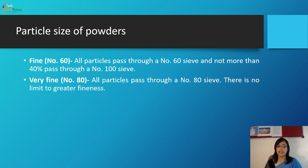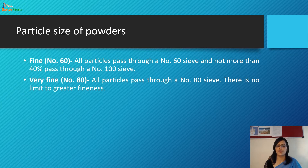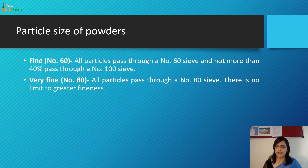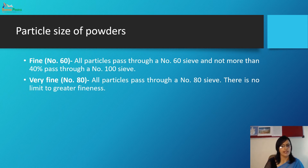Very fine: all particles pass through sieve size number 80 and there is no limit to greater fineness. So this is about the different particle size categories — very coarse, coarse, moderate coarse, fine, and very fine — and this is how we classify them.